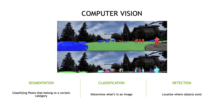Image segmentation deals with placing each pixel of an image into specific classes that share common characteristics. It's widely used in many fields including manufacturing, autonomous driving, medical imaging, and more. For example, in the image shown, common objects are colored in the same color.